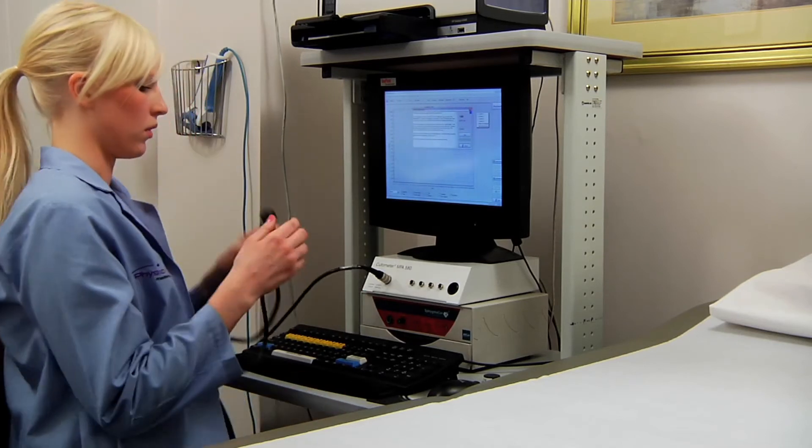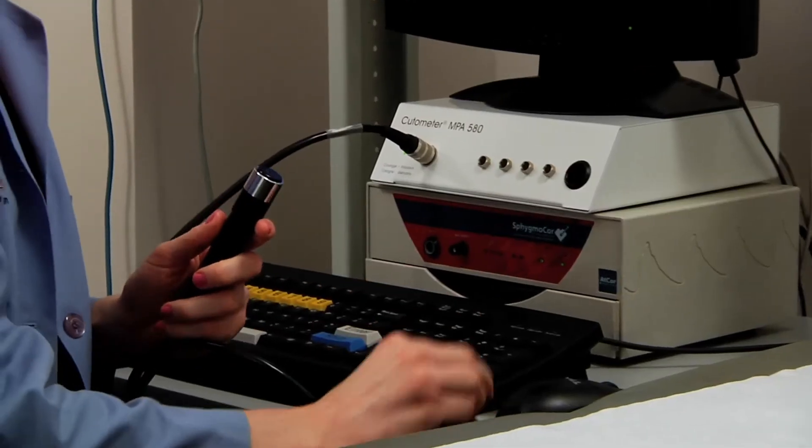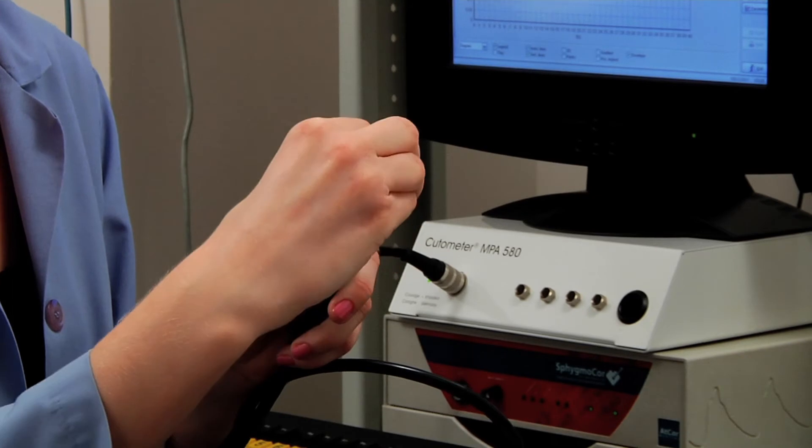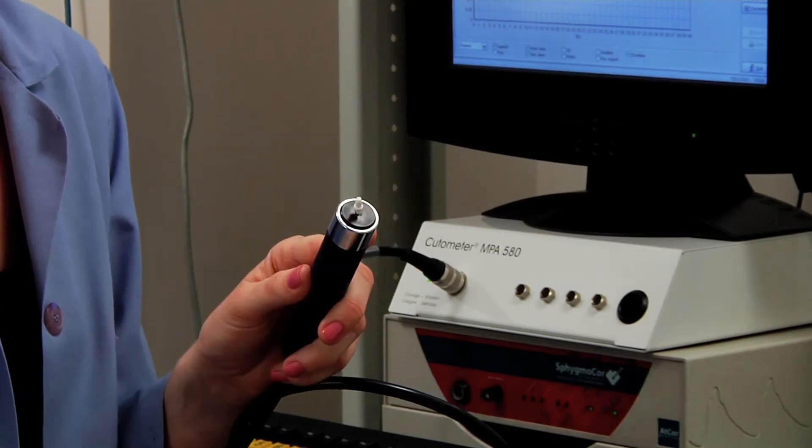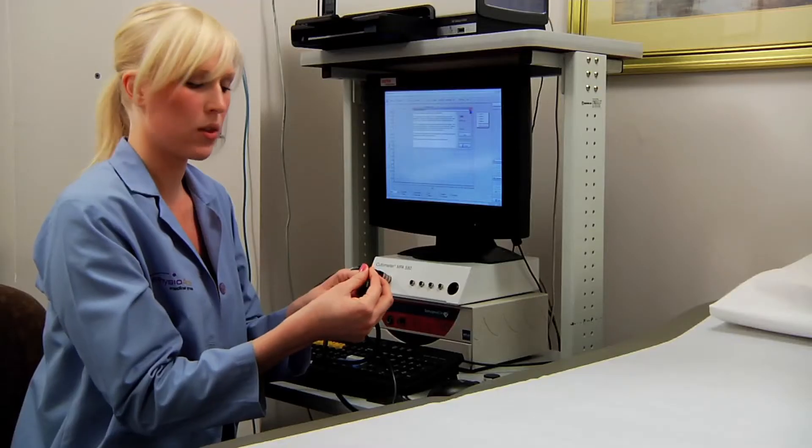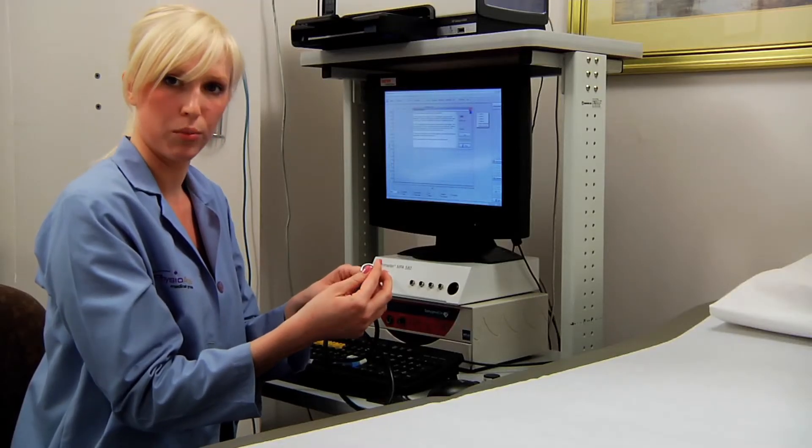Essentially what you'll do, you'll take the lid off. You're going to clean the probe very carefully with this special brush that comes with the cutometer. You're going to place the brush inside of the hole, just gently turn it three to four times. This will help clean out all the oils inside of the probe.